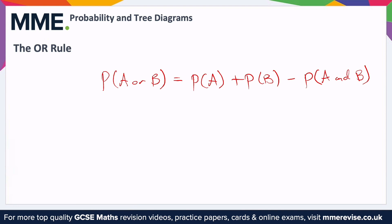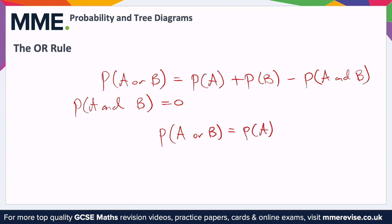If A and B cannot happen together — meaning if A happens then B is impossible or vice versa — we say they are mutually exclusive. Then the probability of A and B is equal to 0, because they can't both happen at the same time. So the OR rule reduces to: probability of A or B equals probability of A plus probability of B.